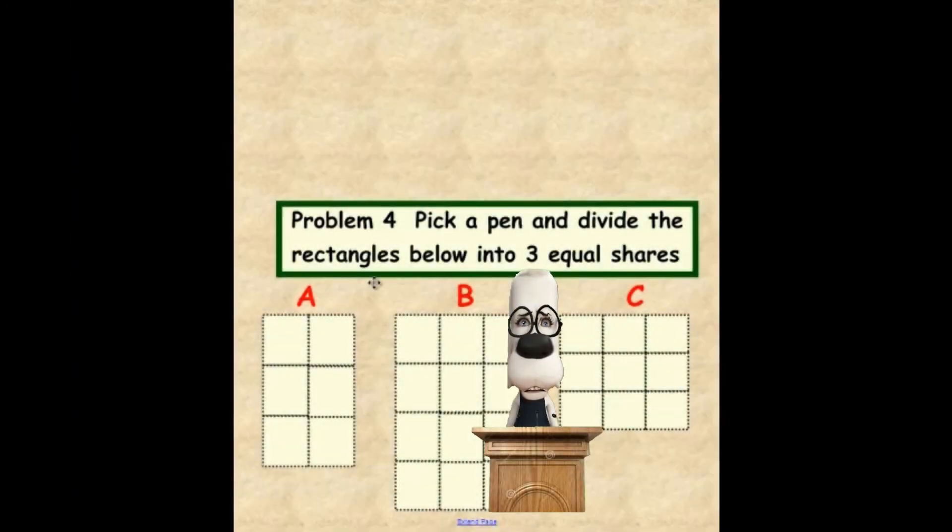Okay, we are on the very last problem, problem four. And you'll notice that we have one, two, three rectangles: A, B, and C. What we'd like for you to do is divide these up into three different or equal shares for each one.